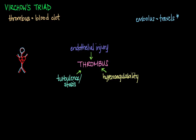Endothelial injury, or injury to the blood vessel's inner wall, can be caused by a wide variety of insults, including hypertension, infection, toxins, or metabolic disturbances like hyperlipidemia. What happens is there is loss of endothelium that can lead to exposure of the subendothelial extracellular matrix, which initiates a clotting cascade leading to the adhesion of platelets, release of tissue factor, and eventually the formation of a fibrin clot.